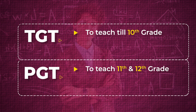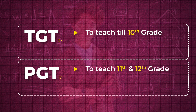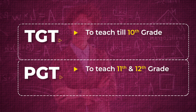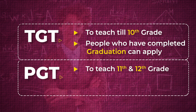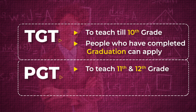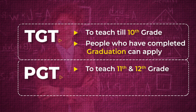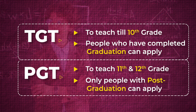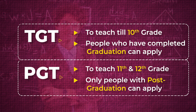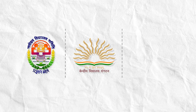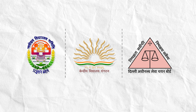Another difference is the qualification required for both these exams. People who have completed their graduation can apply for the TGT examination and obtain the TGT certificate, whereas aspirants who have completed their post-graduation can apply for the PGT examination and obtain their PGT certificate. Different governing bodies like NVS, KVS, and DSSSB conduct TGT and PGT examinations.